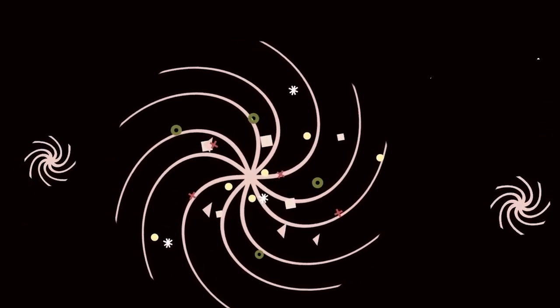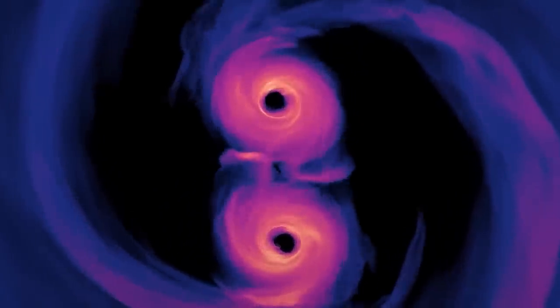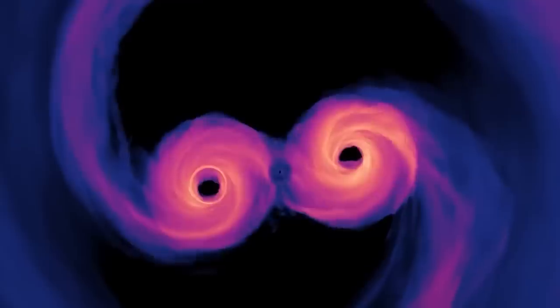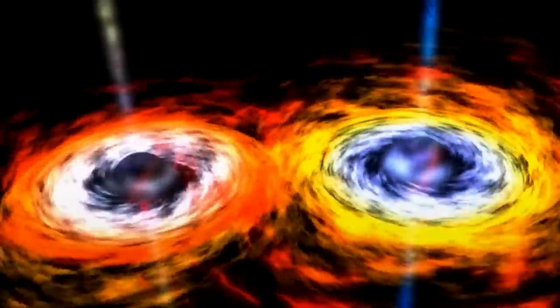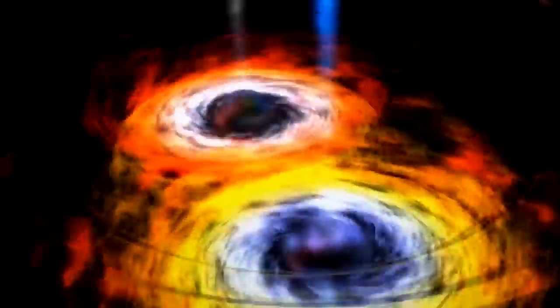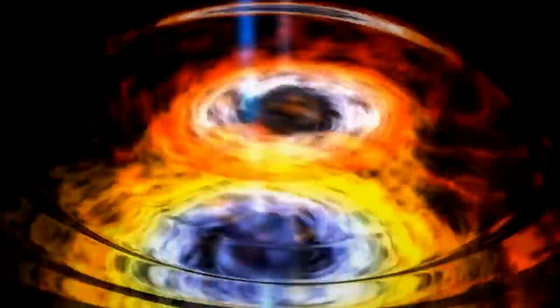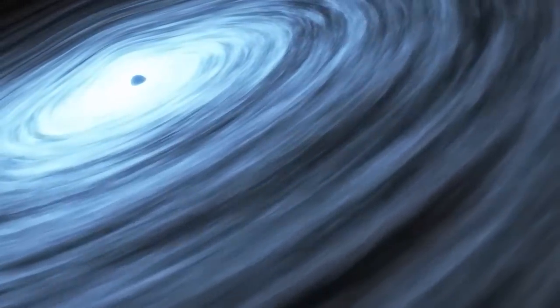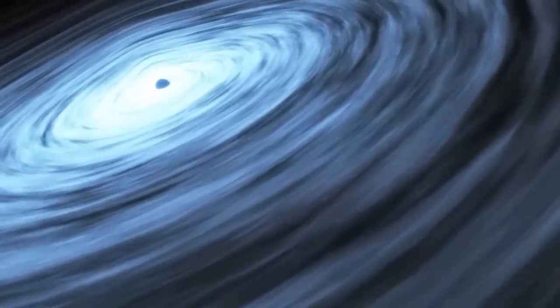Galactic cannibalism can also have significant effects on the black holes at the centers of galaxies. If the two galaxies have black holes, they can merge to form a larger black hole. The process of black hole mergers is thought to be responsible for the formation of some of the most massive black holes observed in the universe.